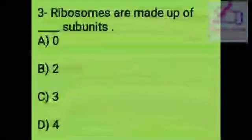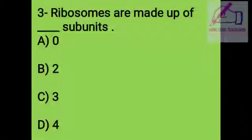Question 3: Ribosomes are made of how many subunits? A. Zero, B. Two, C. Three, D. Four. The right answer is 2.